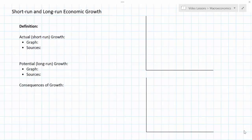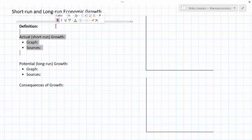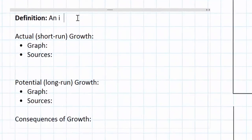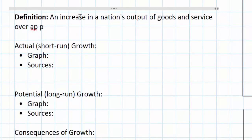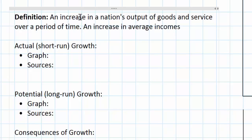In this lesson we're going to focus on economic growth. Economic growth is simply defined as an increase in a nation's output of goods and services over a period of time. Another way to look at economic growth is that incomes are increasing on average in a nation over time, so you could say it's an increase in average incomes over time.